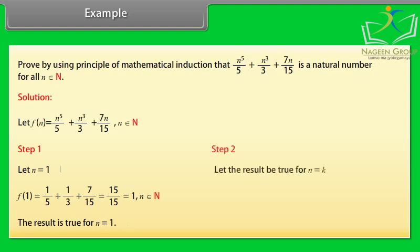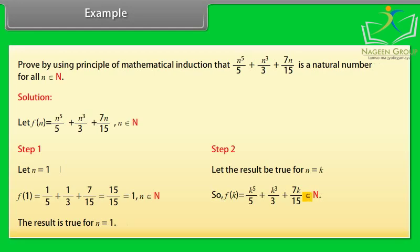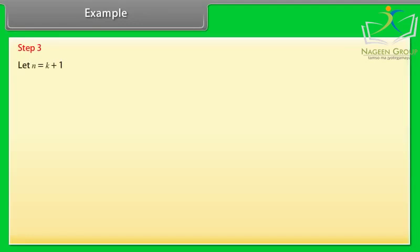Step 2: Let the result be true for n = k. So f(k) = k⁵/5 + k³/3 + 7k/15 belongs to N. Name it equation (1). Step 3: Let n = k+1. So f(k+1) = (k+1)⁵/5 + (k+1)³/3 + 7(k+1)/15.